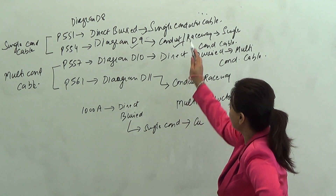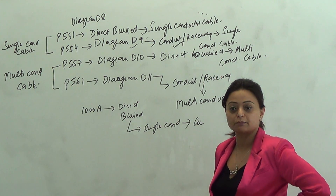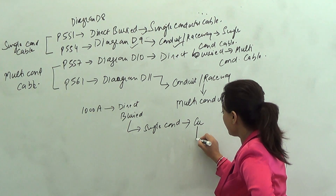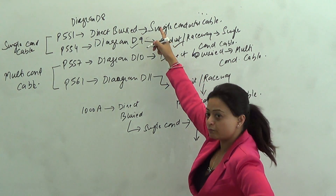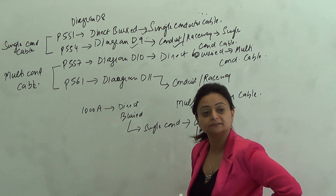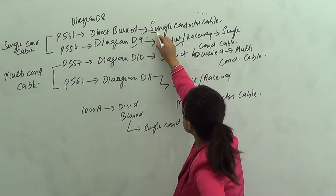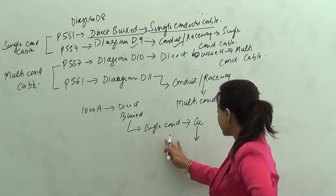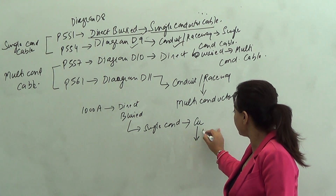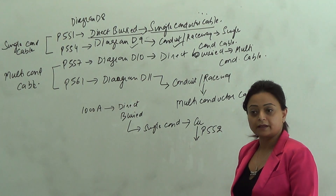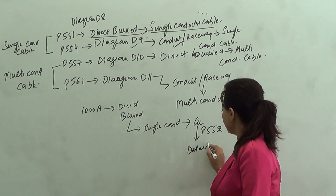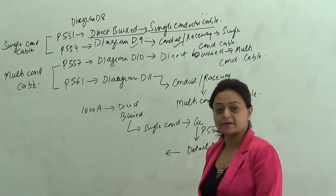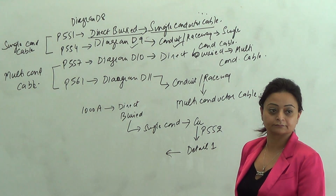Now I want each one of you to go to page 552. Tell me whether page 552 is copper table or aluminum table. Copper table. Why would I go to the first diagram? Because I am given directly buried and single conductor cable, so both conditions — single conductor and directly buried — are satisfied. Based on that, we went to page 552 because that's the copper table. Look for detail one because I am not doing any parallel run.